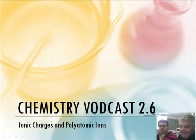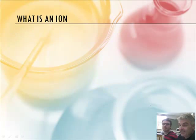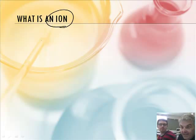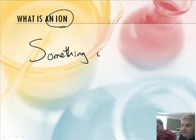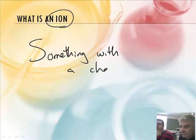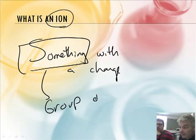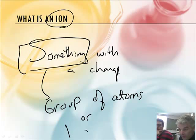We're going to talk about ionic charges and polyatomic ions. Hey, what's an ion, Mr. Sams? Nothing — what's an ion with you? No, that's not right. An ion is something with a charge — usually an atom or group of atoms with a charge more specifically. It could just be an individual atom.